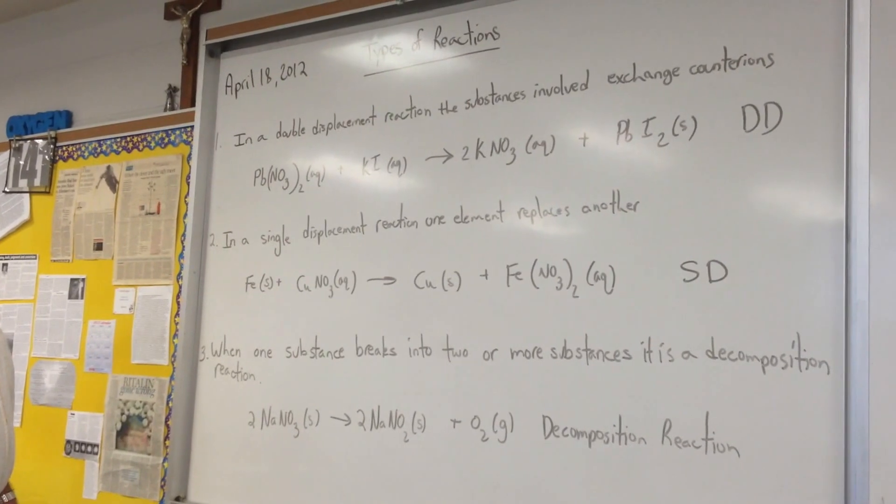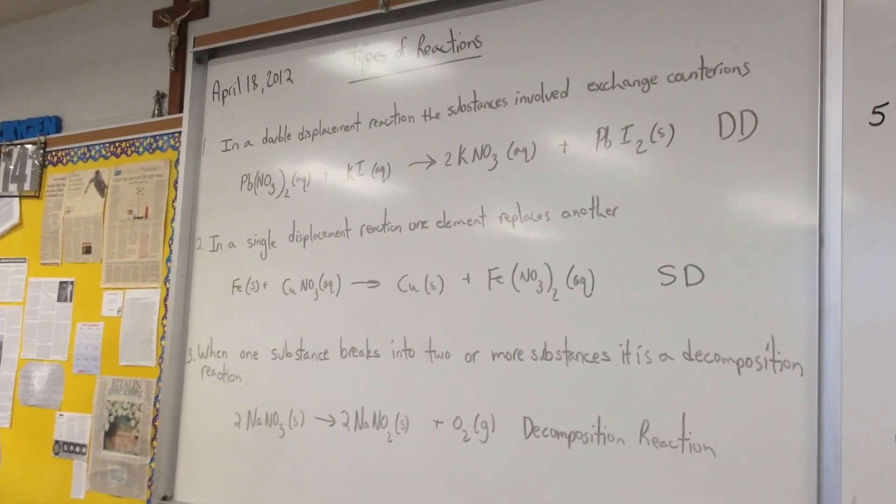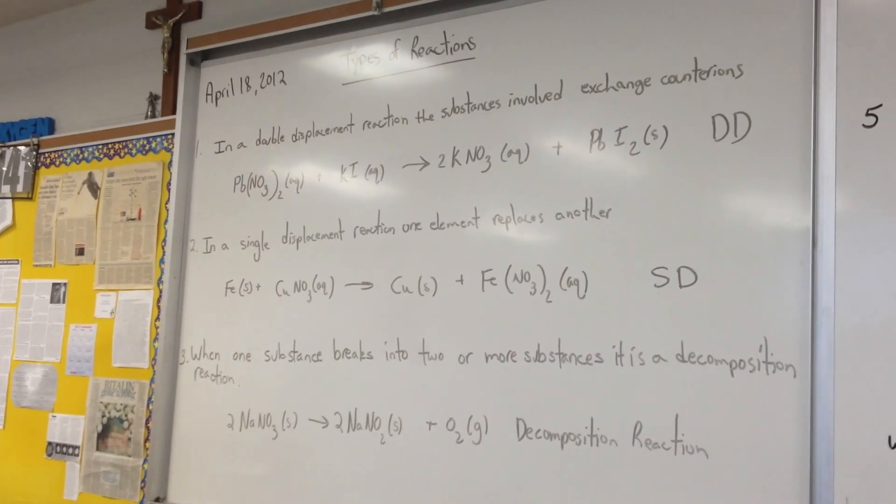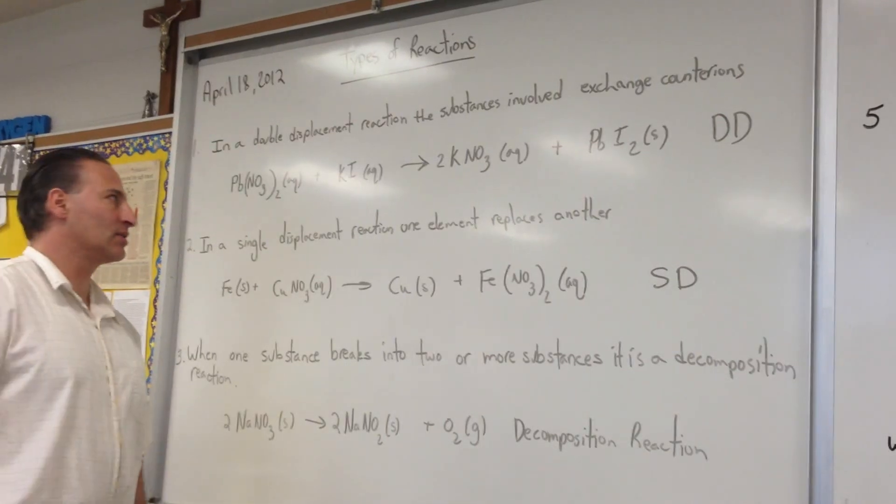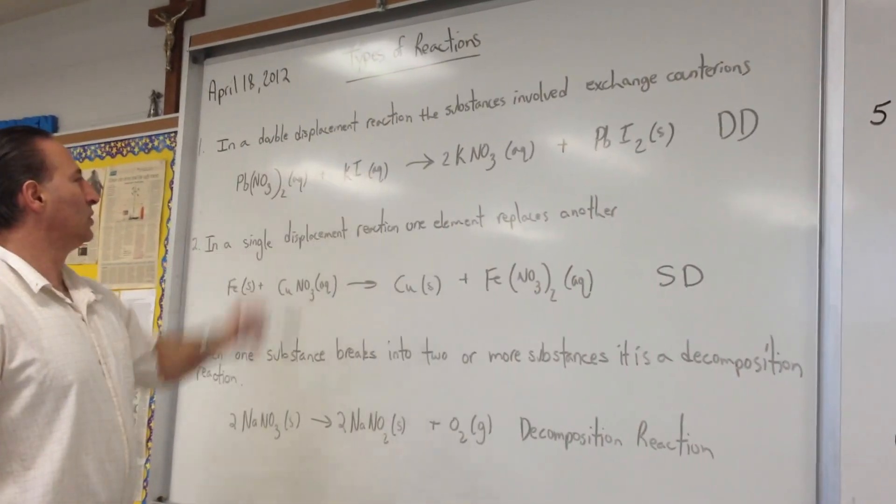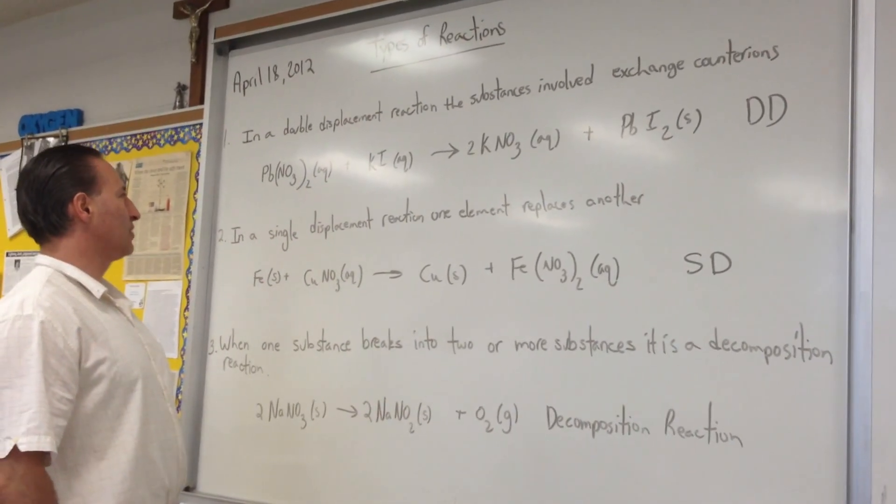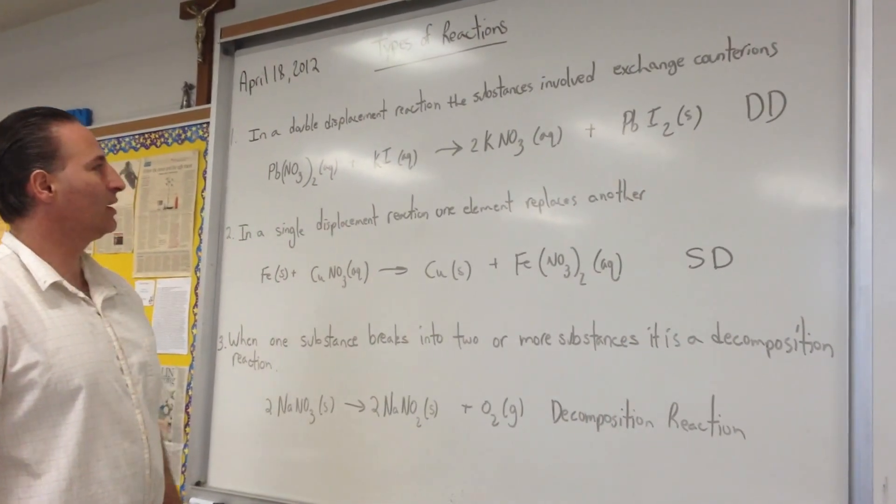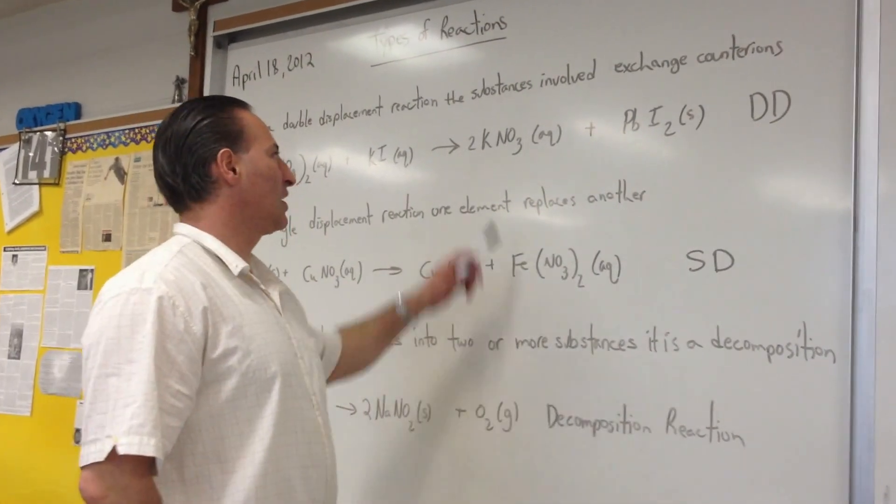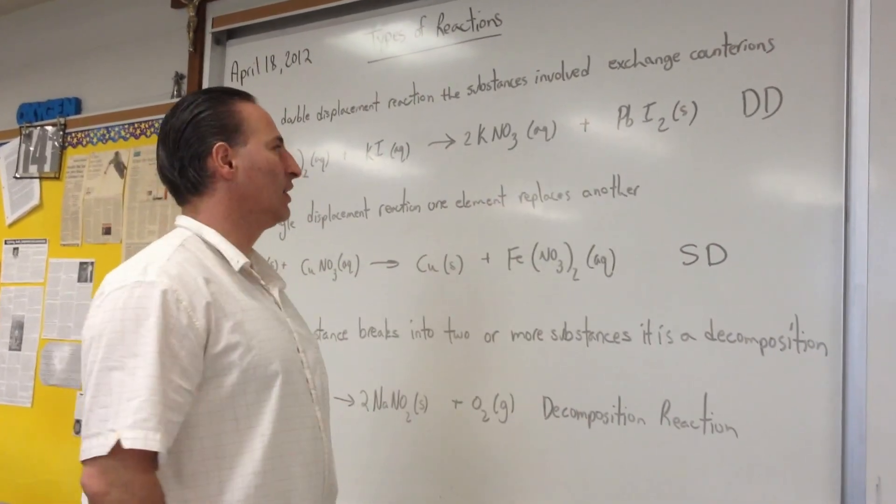So the first one we're going to look at is double displacement. In a double displacement reaction, the substances involve exchange counter-ions. So you have two ionic substances here, lead nitrate, plumbous nitrate that is, and potassium iodide. And the products are potassium nitrate and lead iodide.